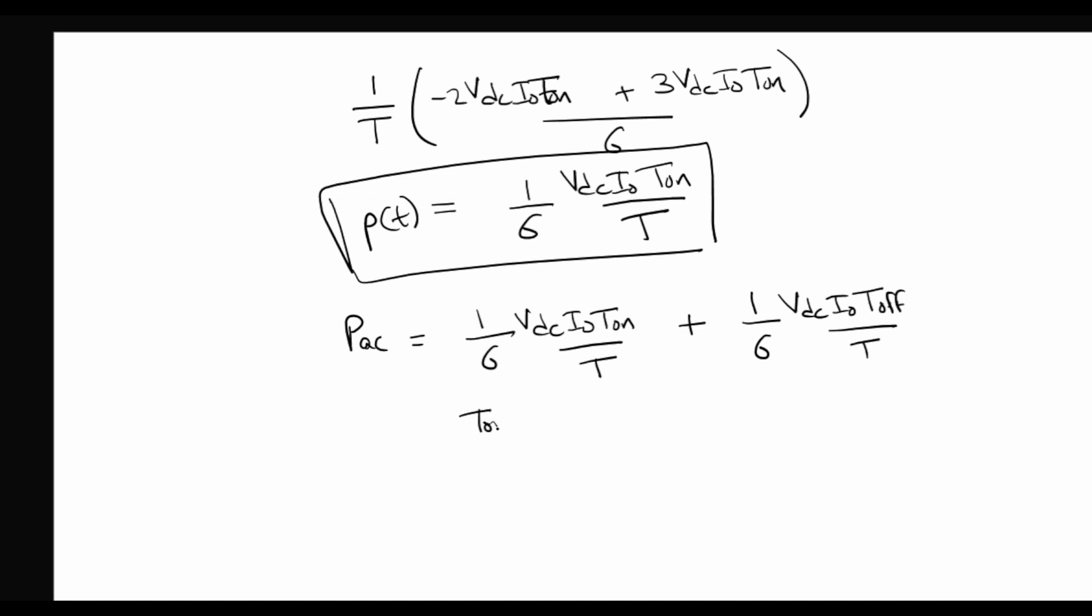An assumption we can make is that T on is equal to T off is equal to the switching transition period TSW. If I substitute this in these expressions, we can get the total AC switching loss as 1 by 3 VDC I0 T switch over T.